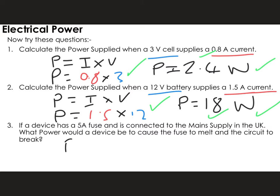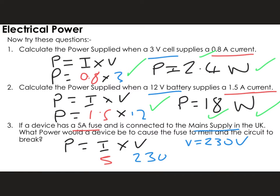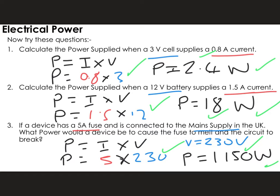The final question: power is equal to current times potential difference. A device has a 5 amp fuse, so 5 amps is my current, connected to the main supply in the UK, meaning voltage equals 230 volts. What power would cause the fuse to melt? Putting 5 and 230 into the equation: power equals 5 times 230, which is 1,150 watts. You get one mark for substituting the correct numbers, one for the correct answer, and one for the correct unit — a score out of 3.